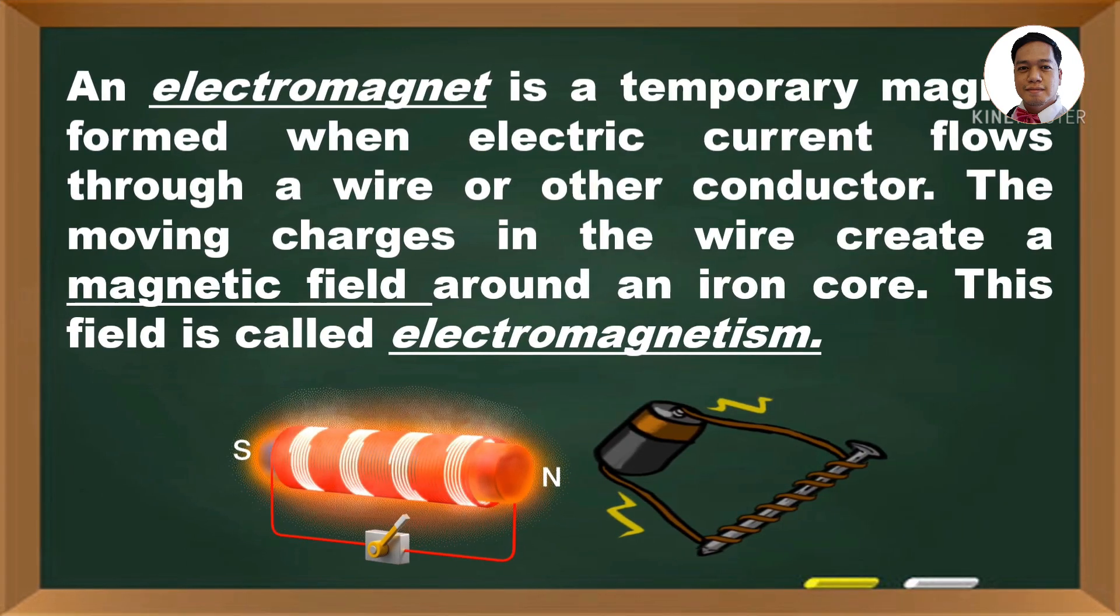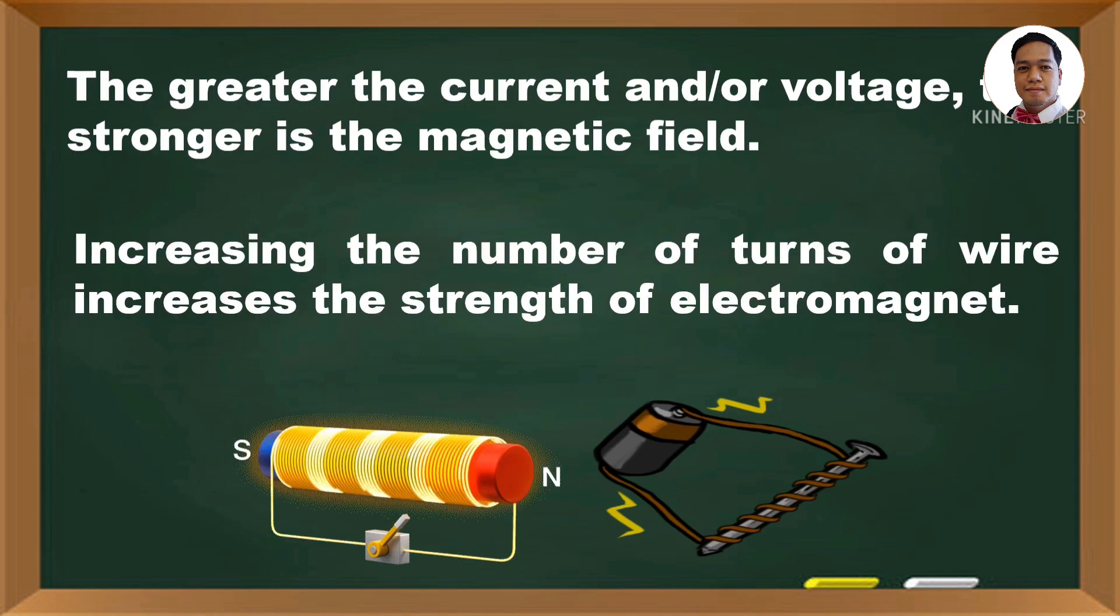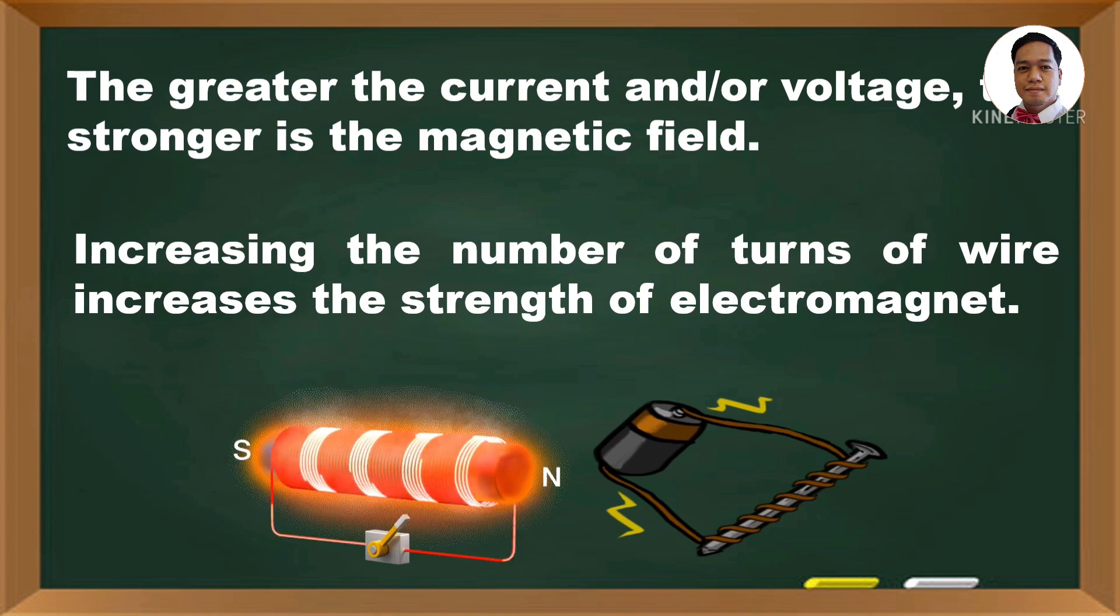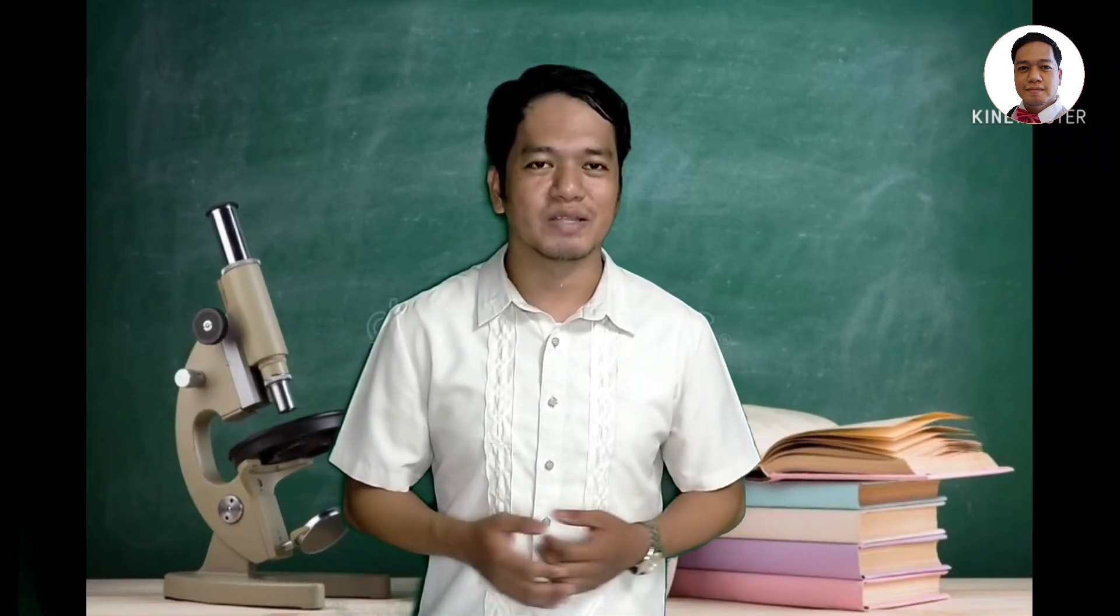An electromagnet is a temporary magnet, formed when an electric current flows through a wire or other conductor. The moving charges in the wire create a magnetic field around an iron core. This field is called electromagnetism. The greater the current or voltage, the stronger is the magnetic field. Increasing the number of turns of wire increases the strength of electromagnet.